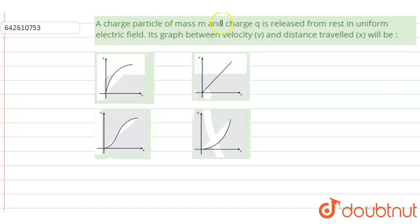particle of mass m and charge q is released from rest in a uniform electric field. Its graph between velocity v and distance travelled x will be: So, a charged particle when it